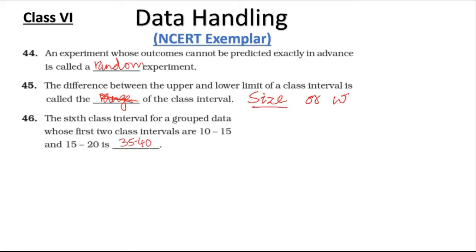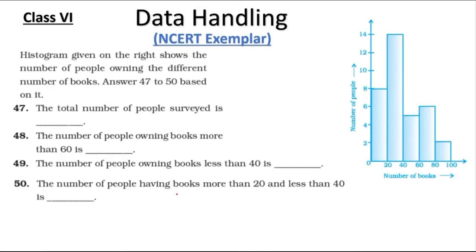Question 46: The sixth class of the grouped data having the intervals 10 to 15, 15 to 20... up to 35 to 40. Here we have a histogram. Questions 47 to 50 are based on this histogram, which shows the number of people with the number of books.